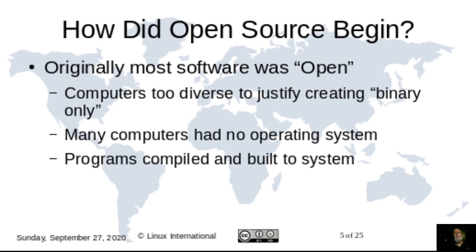How did open source begin? A lot of people feel that open source began at the time of Richard Stallman and the GNU project, but if you go back far enough in time, you realize that most of the software created in the early days of computers was open. It was transmitted to people as source code, because the computers of those days were physically very large and very expensive, but logically — memory size, CPU speed — very small. There were very few of them, and the number of different computers built with different operating systems did not justify creating a binary distribution.